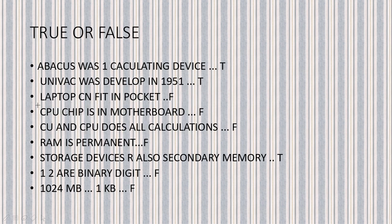Now True or False. Was Abacus the first calculating device? True — Abacus was the first calculating device, made before 5000 years. Was UNIVAC developed in 1951? Yes, true. Can a laptop fit in our pocket? No, it's impossible — a laptop cannot fit in our pocket but can fit in a bag. Is the CPU chip in the motherboard? No, it is in the system unit. Do CU and CPU do all calculations? No — ALU is responsible for all calculations.